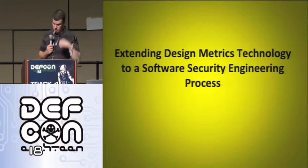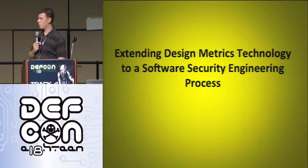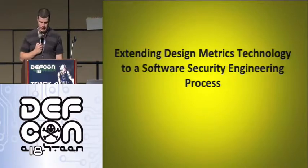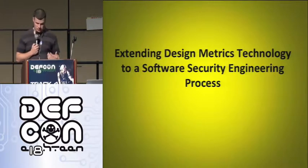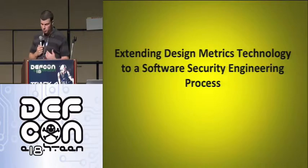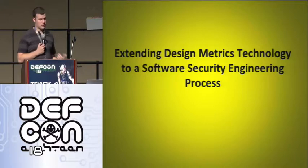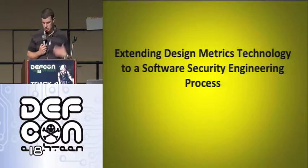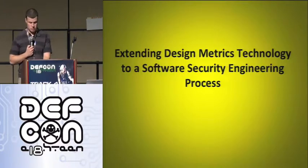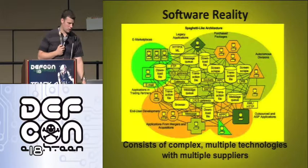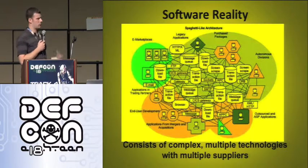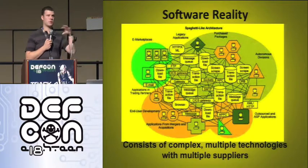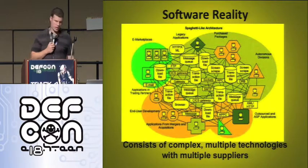So extending design metrics technology to a software security engineering process — what we're really saying is: how do these reliability metrics actually apply to security? Looking at defect rates, a deployed software package of one million lines of code has 6,000 defects. If we assume 1% of those defects are security vulnerabilities, there are at least 60 different opportunities for someone to attack that system. The majority are reliability faults, and a small number of those will actually be security faults.